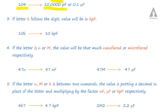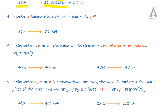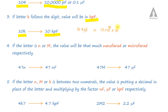Coming to the third type. If the letter K follows a digit, the value will be in kilopicofarad. For example, 10K means 10 kilopicofarad, which equals 10 × 10³ × 10⁻¹² farad.